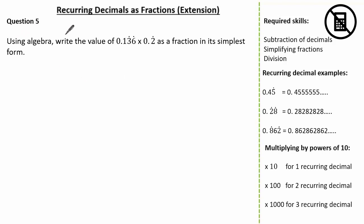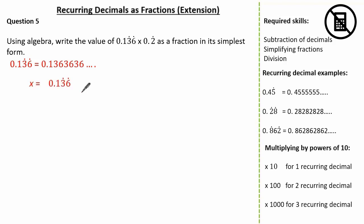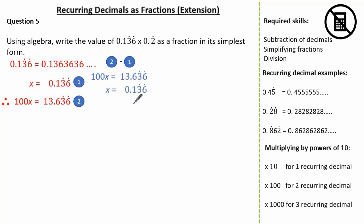Now let's have a look at a slightly harder question. The question wants us to use algebra to write the value of 0.136 recurring times 0.2 recurring as a fraction in its simplest form. Let's start by identifying what 0.136 recurring is. Here, you can see the dot is above the 3 and the 6, so therefore the 3 and the 6 are the only digits that recur. Just like before, let's identify x to be 0.136 recurring. We have 2 digits that recur, so therefore we multiply by 100, giving 100x equals 13.636 recurring. Notice how we've kept to these 3 decimal places. Now let's label equation 1 and equation 2 and subtract. The 3, 6 recurring subtract the 3, 6 recurring is nothing. The 6 subtract the 1 is 5. The 3 subtract the 0 is 3. And the 1 subtract the 0 is 1. Therefore, we know 99x is equal to 13.5.